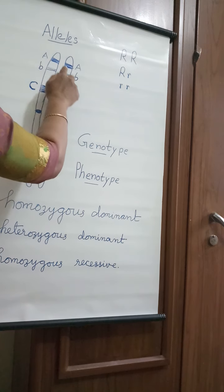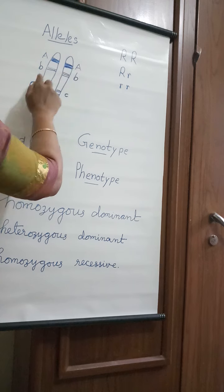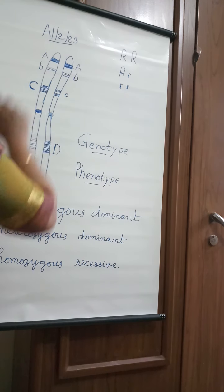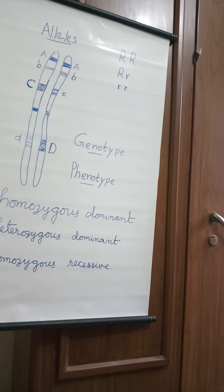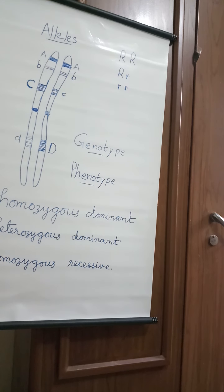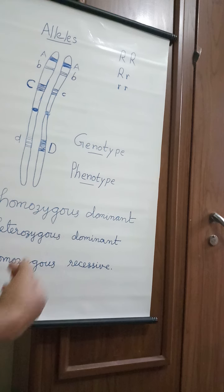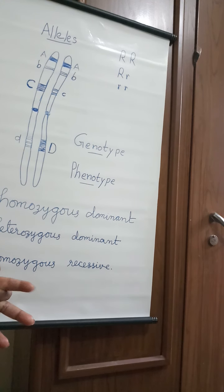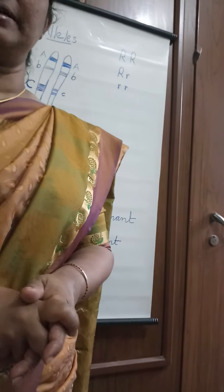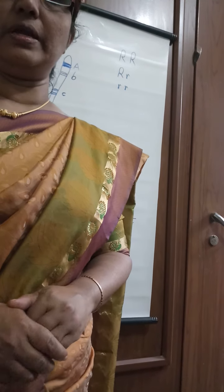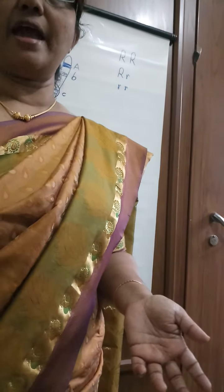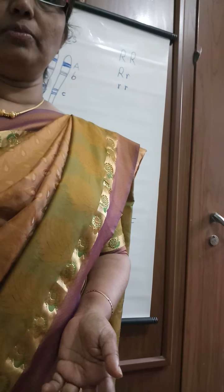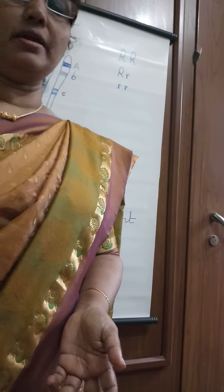Certain letters are given to represent each gene. Alternative forms may also be present in genes. For example, the gene for determining skin color may give dark color from the father and light color from the mother. Genes may have alternative forms — you learned this as alleles. Alleles can determine traits like right-handedness or left-handedness, or eye color such as blue or brown.